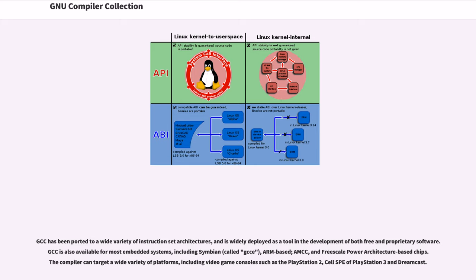GCC has been ported to a wide variety of instruction set architectures, and is widely deployed as a tool in the development of both free and proprietary software. GCC is also available for most embedded systems, including Symbian, ARM-based, AMCC, and Freescale power architecture-based chips. The compiler can target a wide variety of platforms, including video game consoles such as the PlayStation 2, CellSPE of PlayStation 3, and Dreamcast.